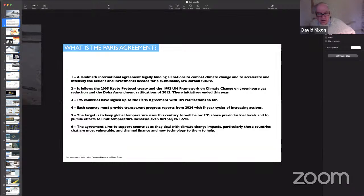So these earlier initiatives, Kyoto and the 1992 framework, ended in 2020. The Paris Agreement is designed to supersede these. 195 countries signed up so far with 189 ratifications. Each country must provide transparent progress reports from 2024. The target is to keep global temperature rises this century to well below two degrees above pre-industrial levels.